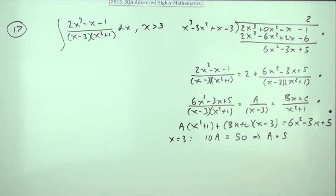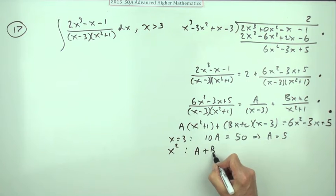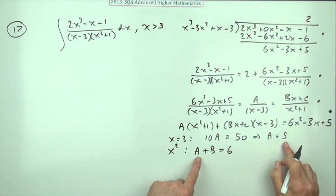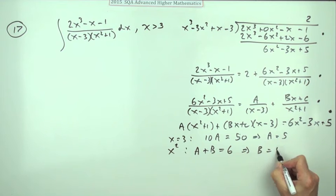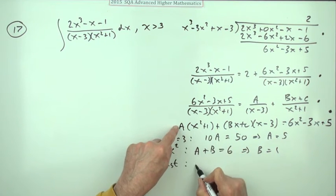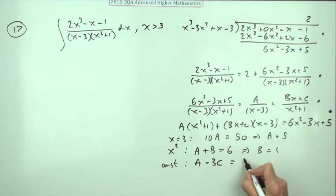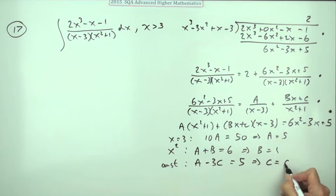However, I prefer to compare corresponding coefficients. Let's look at the x² terms: to make up the x² terms I've got A on this side, I've got B as the only one in that part, and that should come to 6 altogether. Since A is 5, that means straight away B is 1. Then compare the constant terms. For the constant terms, I've got A but the constant term here is -3C, and that should come to 5. A is 5, so that must mean C is 0. There's the third mark.